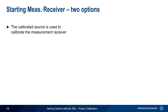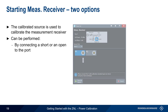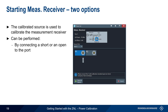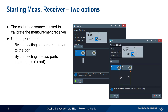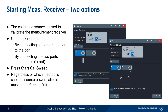Next, a calibrated source from the reference receiver calibration can be used to calibrate the measurement receiver. This calibration can be performed in two ways: either by connecting an open or short to the port, or by connecting the two ports together. The latter is the preferred method because it provides greater accuracy. As before, press Start Cal Sweep to begin the calibration. Remember that regardless of which method is chosen — open/short or connecting the ports together — a source power calibration must be performed first.